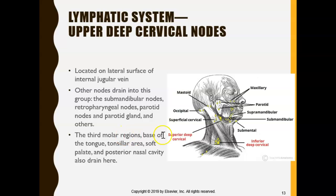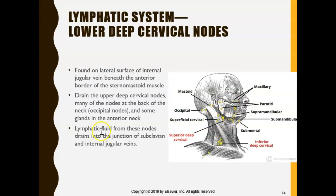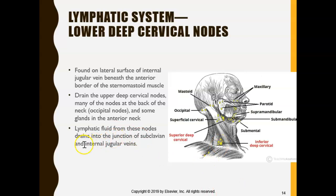The upper deep cervical nodes drain the third molar, the bottom of the tongue, and the soft palate — things that are posterior in the mouth. The lower deep cervical nodes, also known as the inferior deep nodes, receive drainage from the upper deep cervical nodes and some occipital nodes, and they ultimately drain into the internal jugular vein.